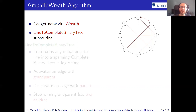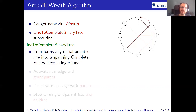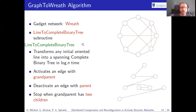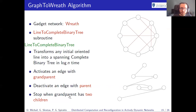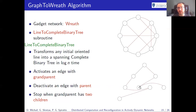We also need a new subroutine: line-to-complete-binary-tree, which is very similar to tree-to-star. You take any initial oriented line and transform it into a complete binary tree, again by activating an edge with the grandparent and deactivating an edge with the parent. The only difference is that you stop when your grandparent already has two children — otherwise you would revert to a star. The result is: activate with grandparent, deactivate with parent, activate with grandparent, deactivate with parent, and you get the complete binary tree.